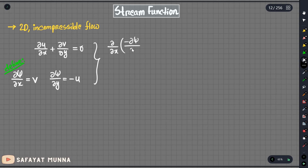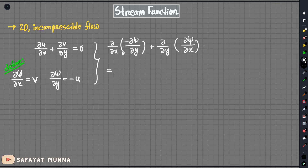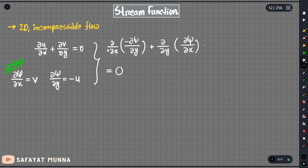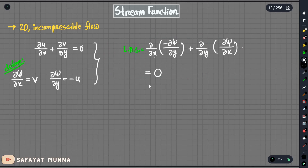We define the stream function psi such that u equals delta psi over delta y and v equals negative delta psi over delta x. We assume that psi has continuous derivatives, and we can see that substituting these into the continuity equation gives us the left-hand side and right-hand side both equaling zero.